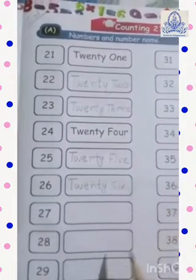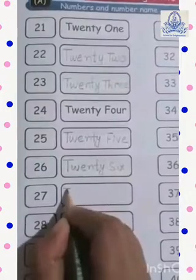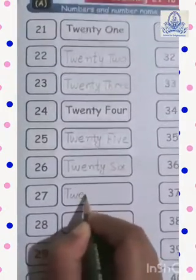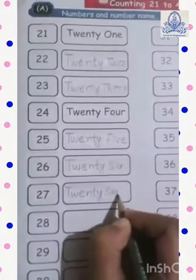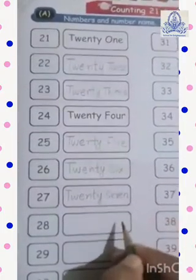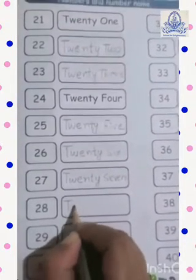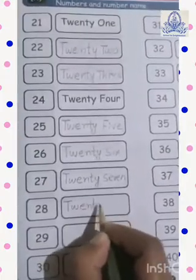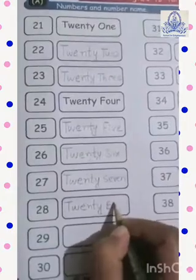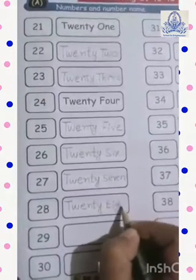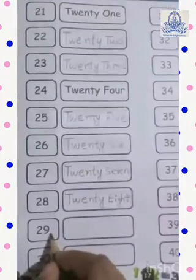Twenty-five: F-I-V-E, 5 — 25. Twenty-six: T-W-E-N-T-Y S-I-X, 6 — 26. Twenty-seven: T-W-E-N-T-Y — 27. Twenty-eight: T-W-E-N-T-Y — 28.